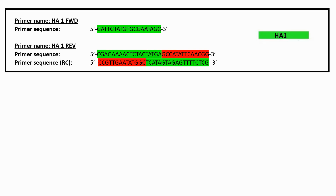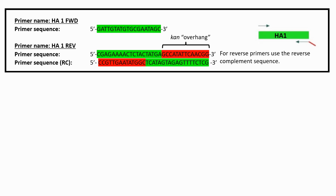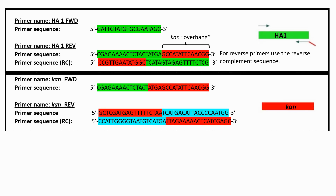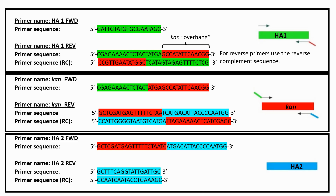Returning back to the primers discussed earlier, here is how the final sequences would look. The homology arm 1 forward primer sequence is shown, followed by the homology arm 1 reverse primer sequence with kanamycin overhang. For reverse primers, the reverse complement sequence needs to be taken. The primer sequence to be used for PCR is shown with RC in brackets. Here are the forward and reverse primer sequences for the kanamycin gene — both have overhanging sequences for joining with the homology arms. Finally, here are the forward and reverse primer sequences for homology arm 2. Only the forward primer has an overhang for joining with the kanamycin gene.